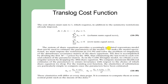The cost shares must sum to 1, which requires, in addition to the symmetry restrictions already imposed, that beta_1 plus beta_2 up to beta_m must equal 1. Also, the summation of sigma_ij over i from 1 to m equals zero — that is, the column sums equal zero — and the row sums equal zero, meaning summation of sigma_ij over j from 1 to m also equals zero.